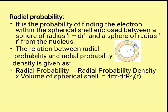Coming to the third type of graphs: radial probability distribution function graphs, or simply radial probability functions graphs. When we plot psi squared versus r, we have drawn the probable electron density around the nucleus. Now if we want to find out the probability of finding the electron in an infinitesimally small region dr, then the volume of that region has to be considered. The product of the probable electron density and the corresponding volume of space is called the radial probability function.